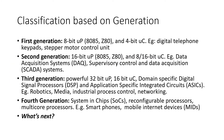Based on generation, embedded systems are classified as first through fourth generation. The first generation used 8-bit microprocessors or 4-bit microcontrollers — examples include early digital telephone keypads and stepper motor control units. The second generation used 16-bit microprocessors or 8-bit microcontrollers, with examples like DAQ (data acquisition systems) and SCADA systems used in large-scale industries and power plants.